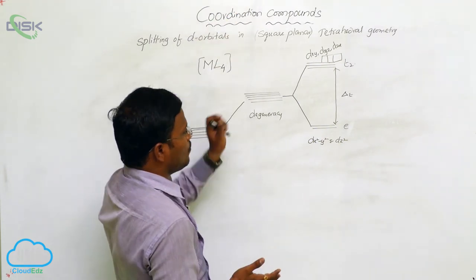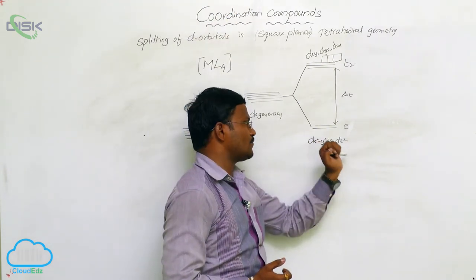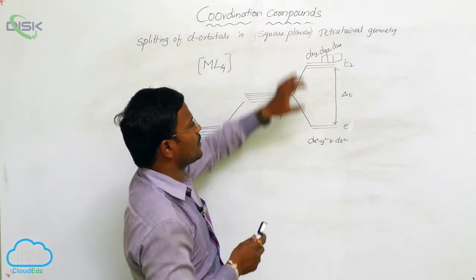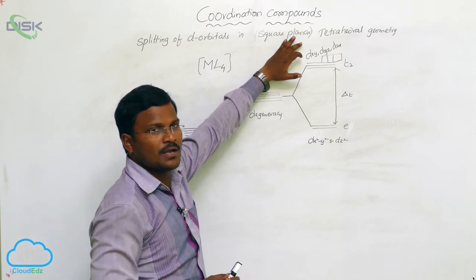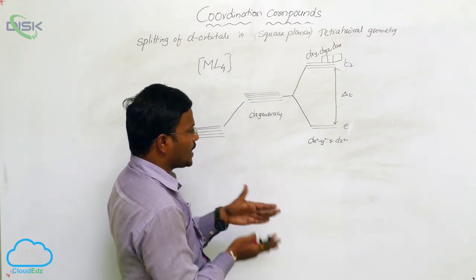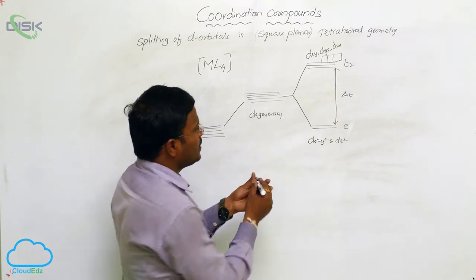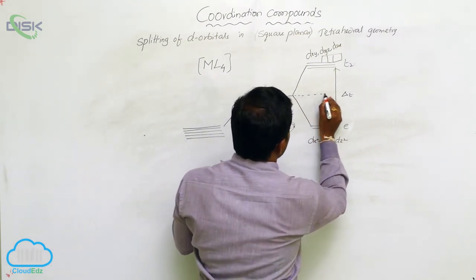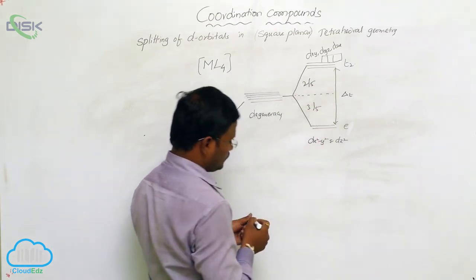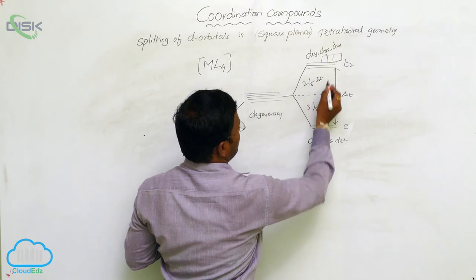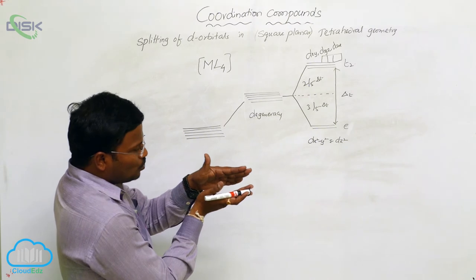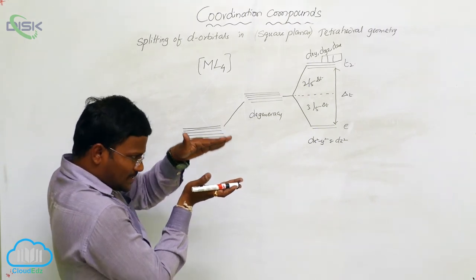In such cases, most electrons prefer to occupy dx²-y² and dz² orbitals, pairing takes place, and this can offer vacant d-orbitals to produce inner orbital complexes. But in the case of weak field ligands, the energy gap is less — it is 2/5 delta T and 3/5 delta T — and due to the smaller energy difference between the E and T2 levels, electrons distribute differently.